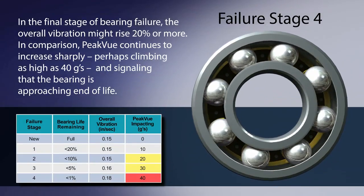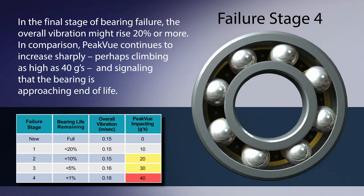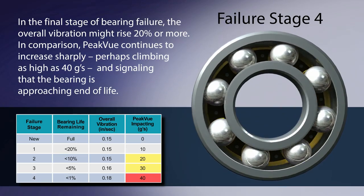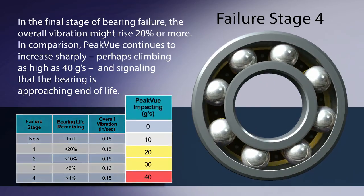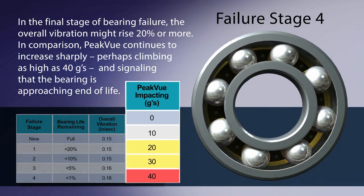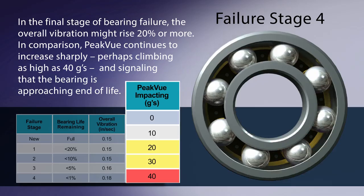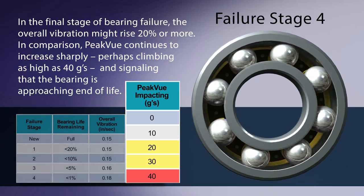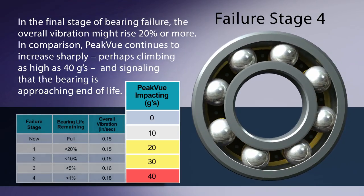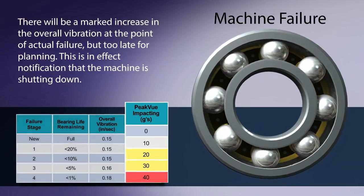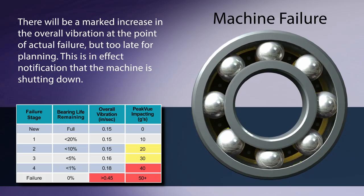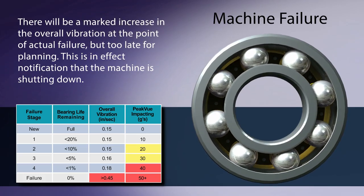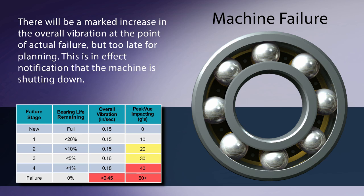In the final stage of bearing failure, the overall vibration might rise 20% or more. In comparison, peak view continues to increase sharply, perhaps climbing as high as 40 G's, signaling that the bearing is approaching end of life. There will be a marked increase in the overall vibration at the point of actual failure, but too late for planning. This is an effect notification that the machine is shutting down.